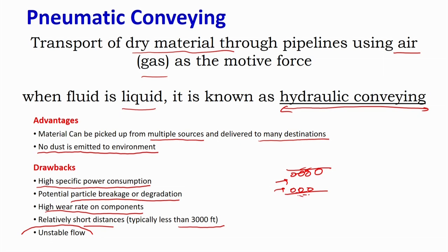The flow is mostly unstable and even a small change in velocity will completely change the flow dynamics. You may transition from a moving solid condition to a choked solid condition, meaning nothing will move at all. Maintaining the flow dynamics is very challenging, and that is also a drawback — it is not easy to operate a pneumatic conveying system.